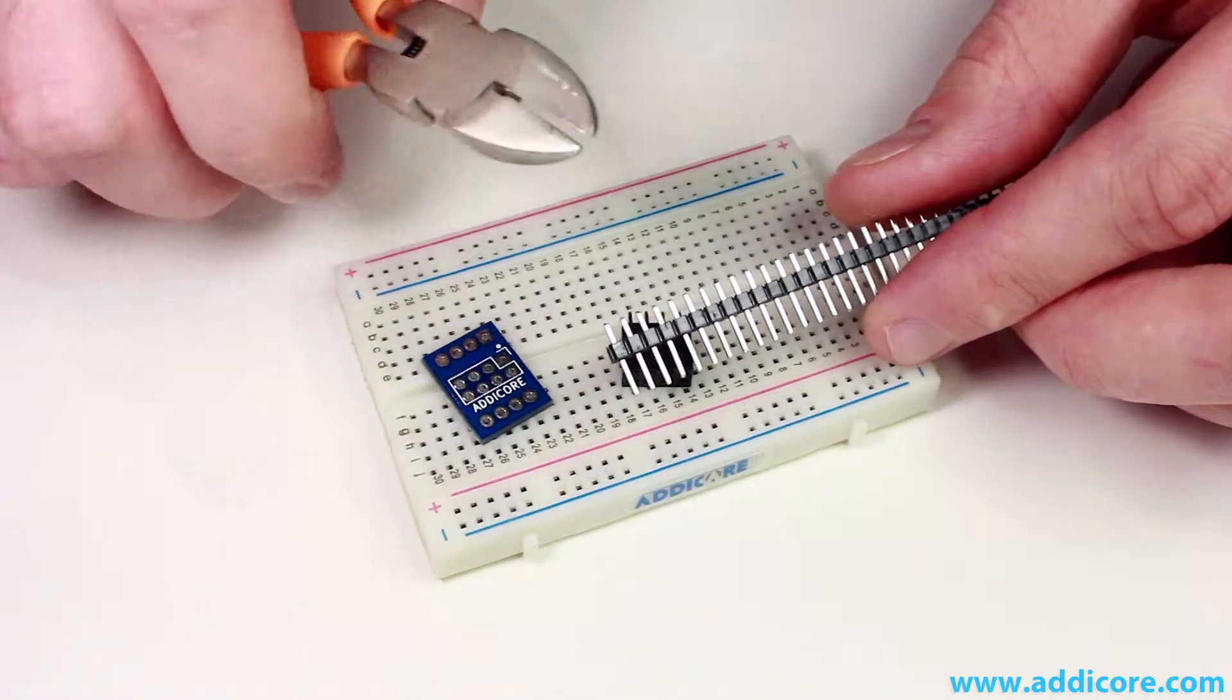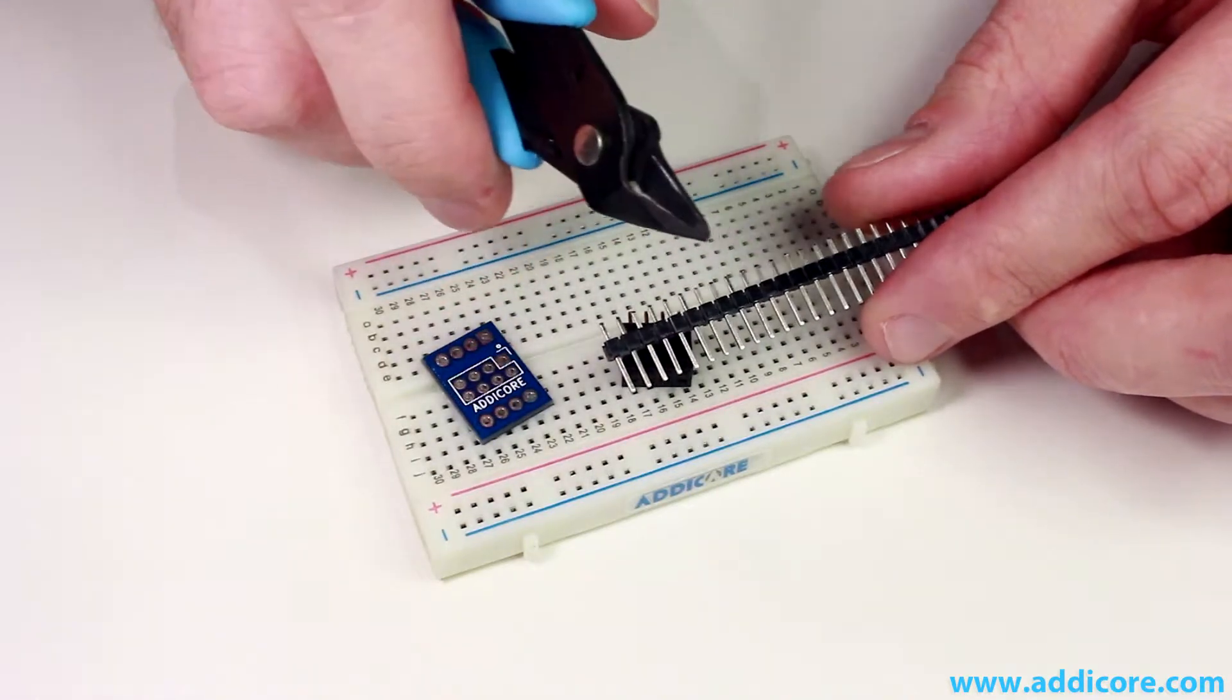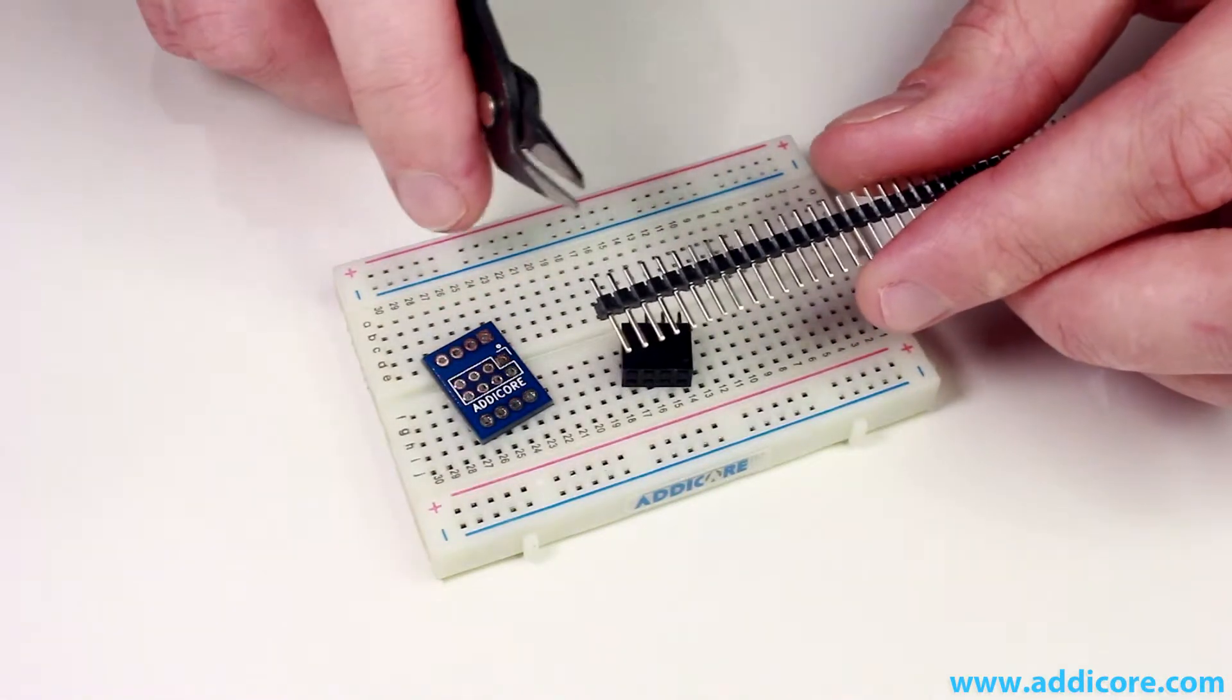In that case we recommend breaking them apart or cutting them off. We recommend something like using a diagonal cutter or a flush cutter. I like to use the flush cutter just because you can get a nice clean cut between the different header pins.